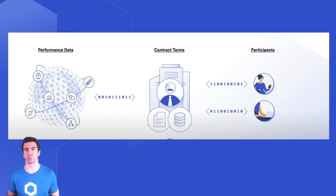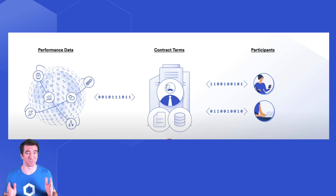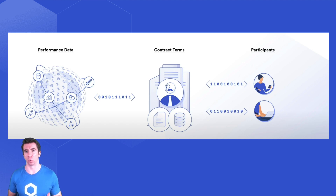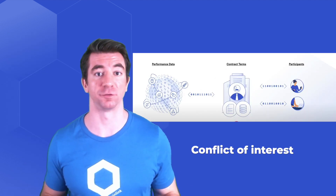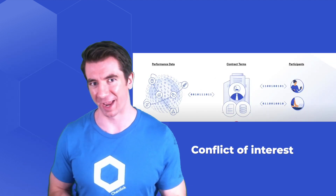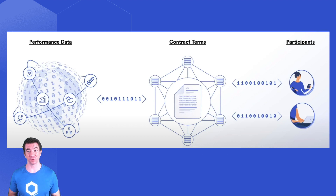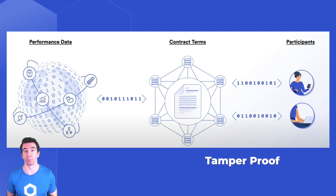This is a huge improvement over traditional contracts because the traditional ones have a fundamental flaw. A malicious entity who owns the contract is now inclined to manipulate the execution of the contract for their own for-profit gains — this is a massive conflict of interest. On the other hand, decentralized applications automatically execute and are therefore tamper-proof from these centralized entities.